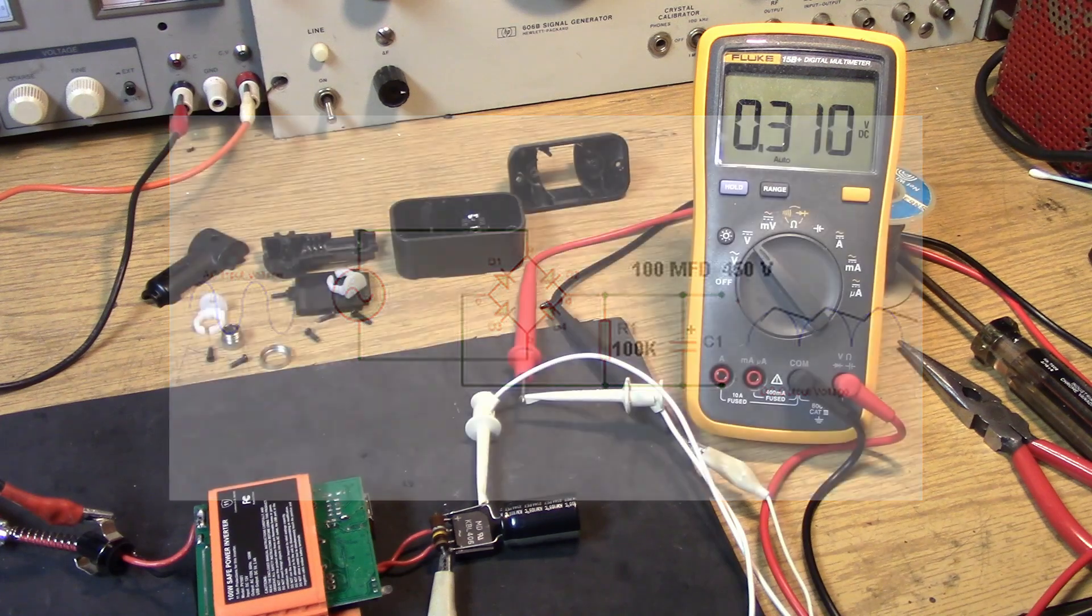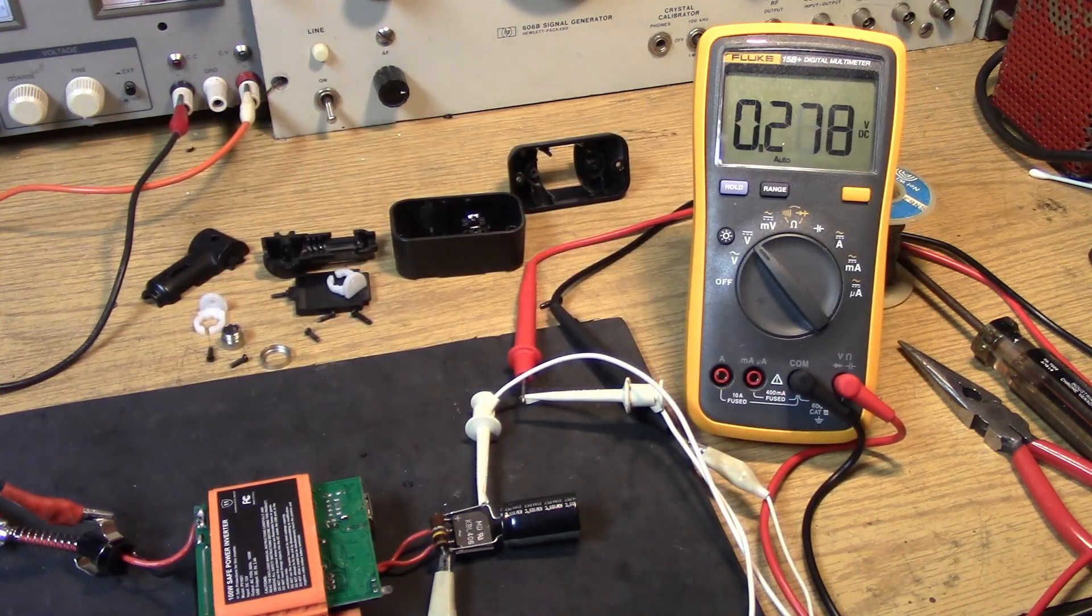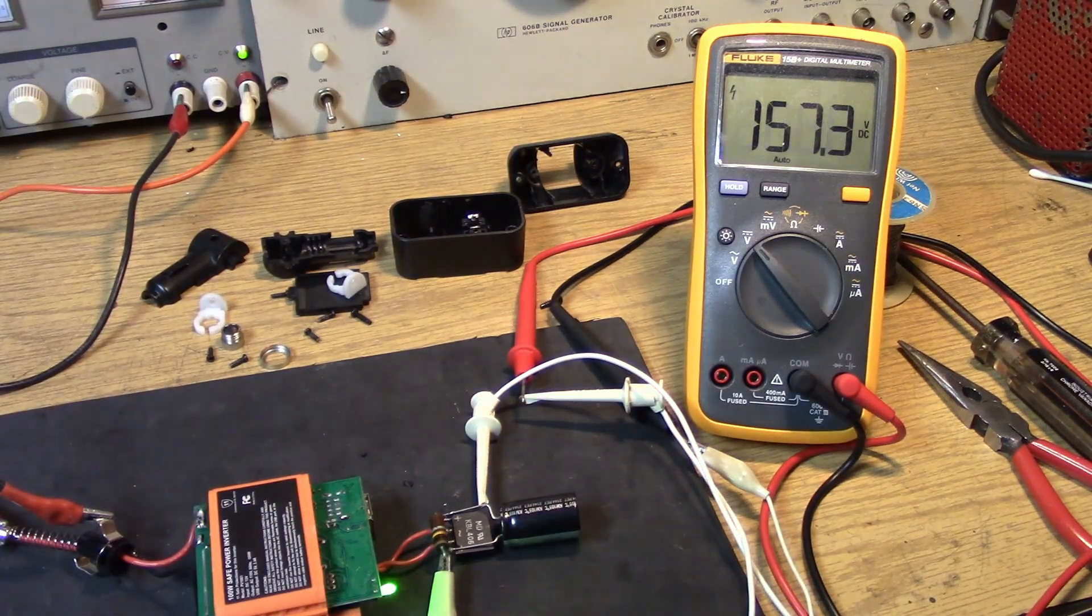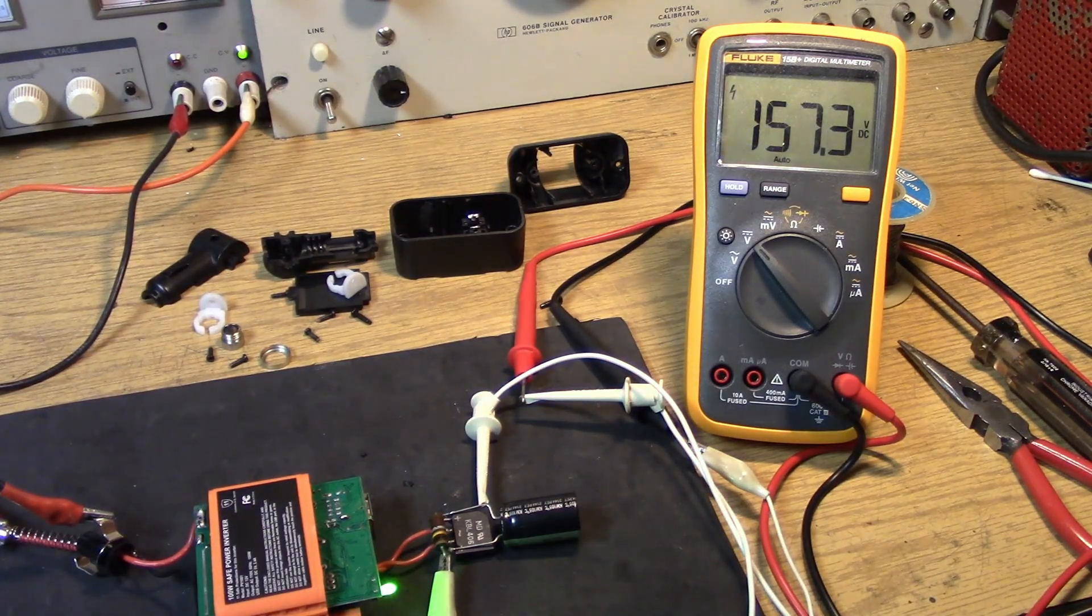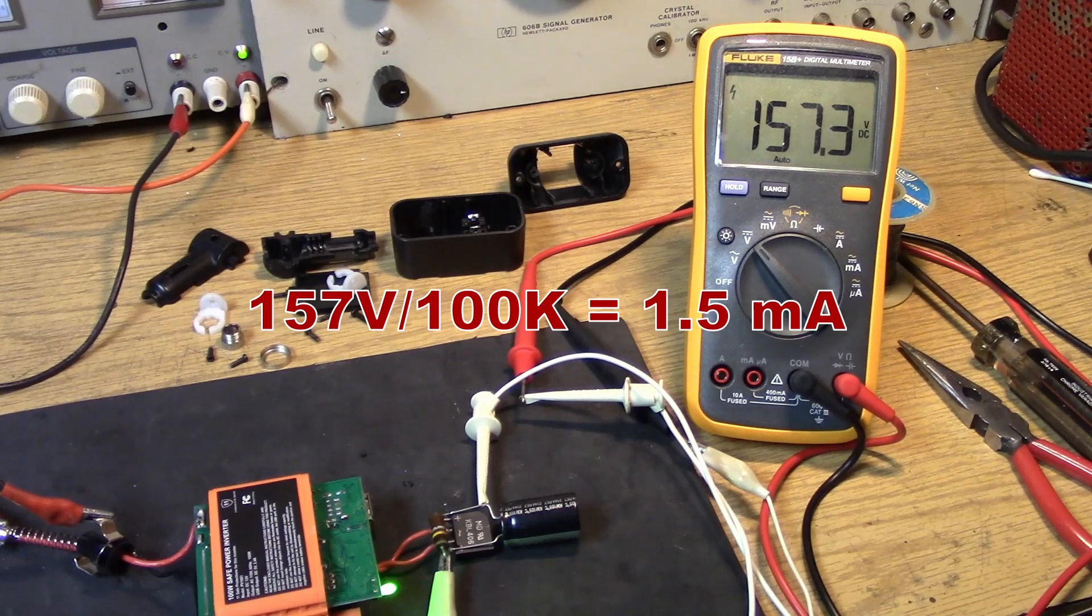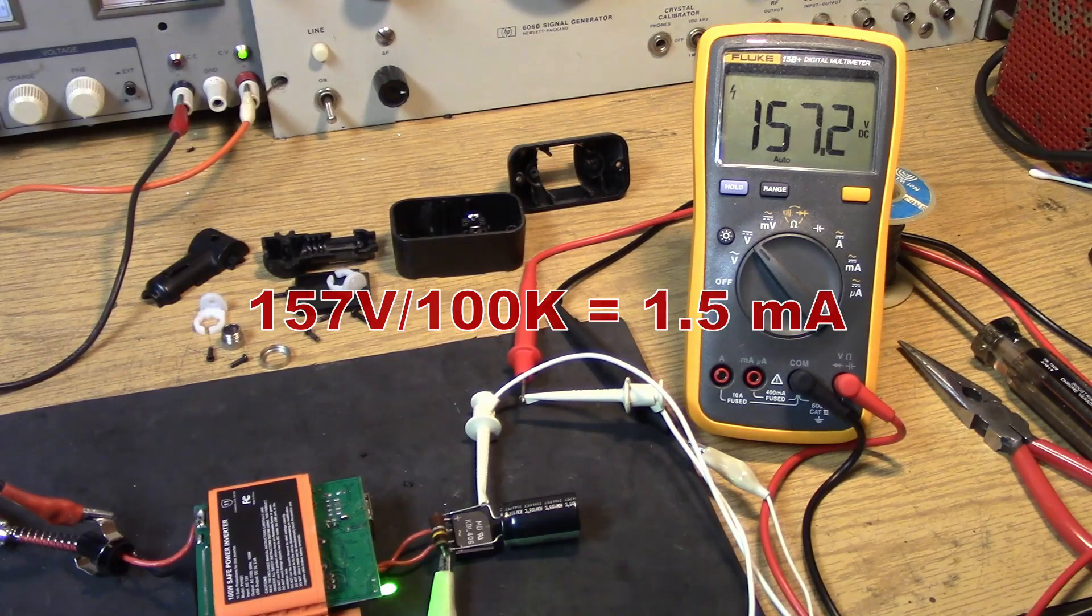So, that's plenty good for what we think we're going to generate here. When I turn it on, we get 157 volts. And of course, that 100k is the load resistor in this case. It's a bleeder resistor. It's a very, very light bleeder resistor.